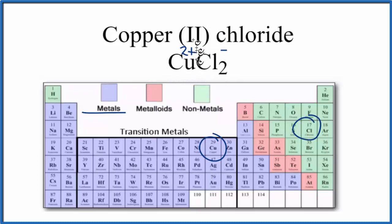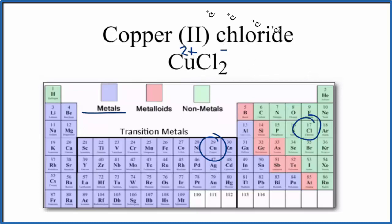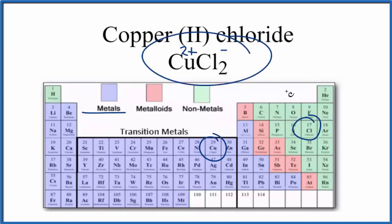So we have our positive copper ion and our negative chloride ion — we actually have two chloride ions. Positive and negative attract, and we end up with an ionic bond. This is Dr. B answering the question whether copper 2 chloride CuCl2 is ionic or covalent. It is ionic.